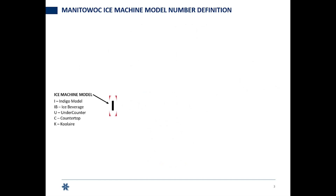So the first thing we're going to call out is the ice machine model. This is an I for the Indigo or the Indigo Next Series ice machine. Both are called out by I, and then you'll see underneath that I the other types of machines that we make.